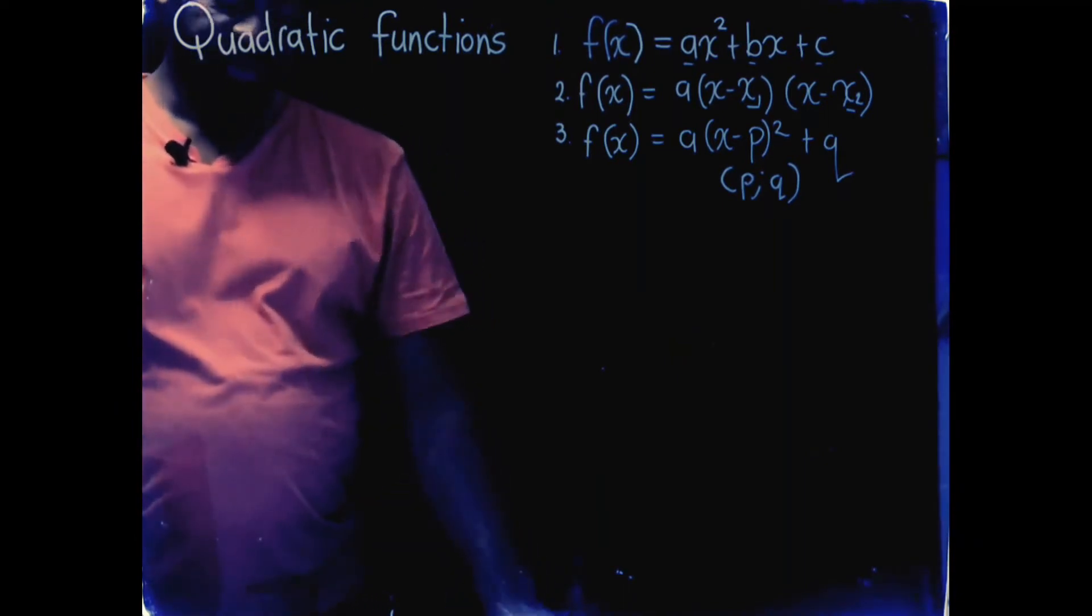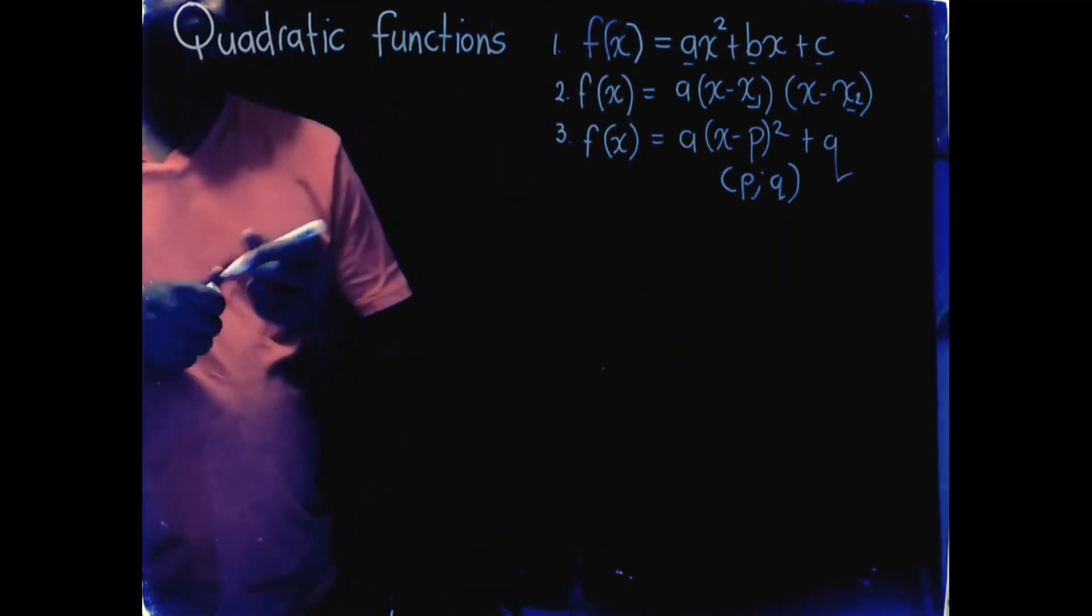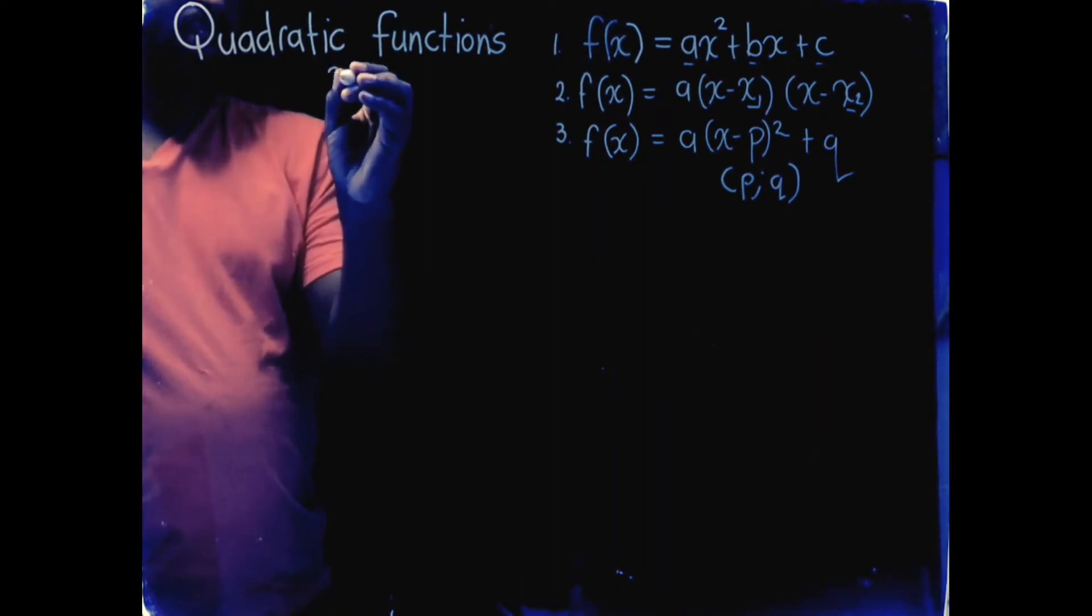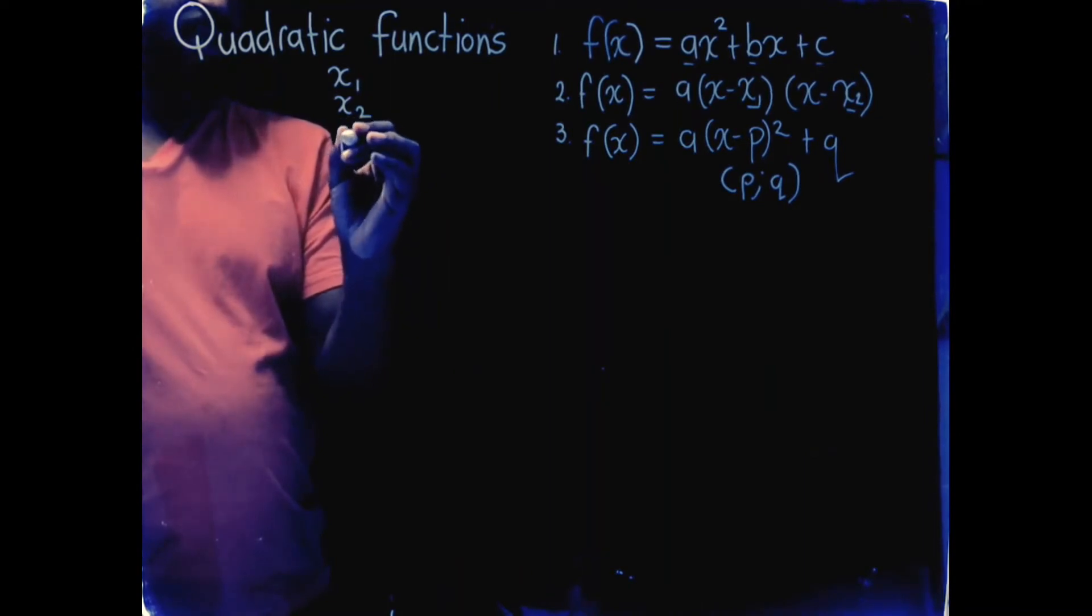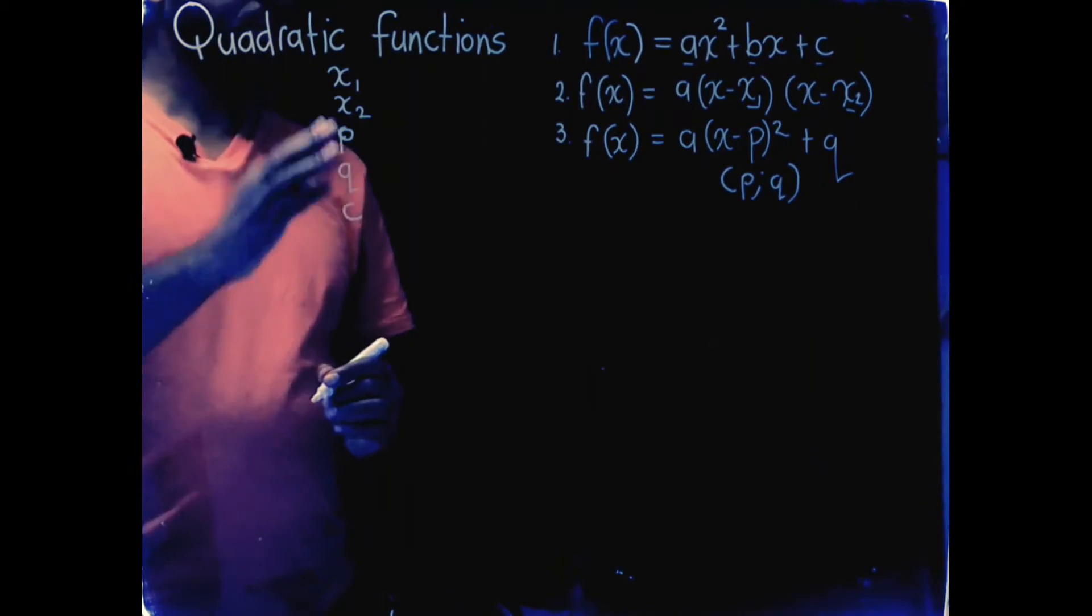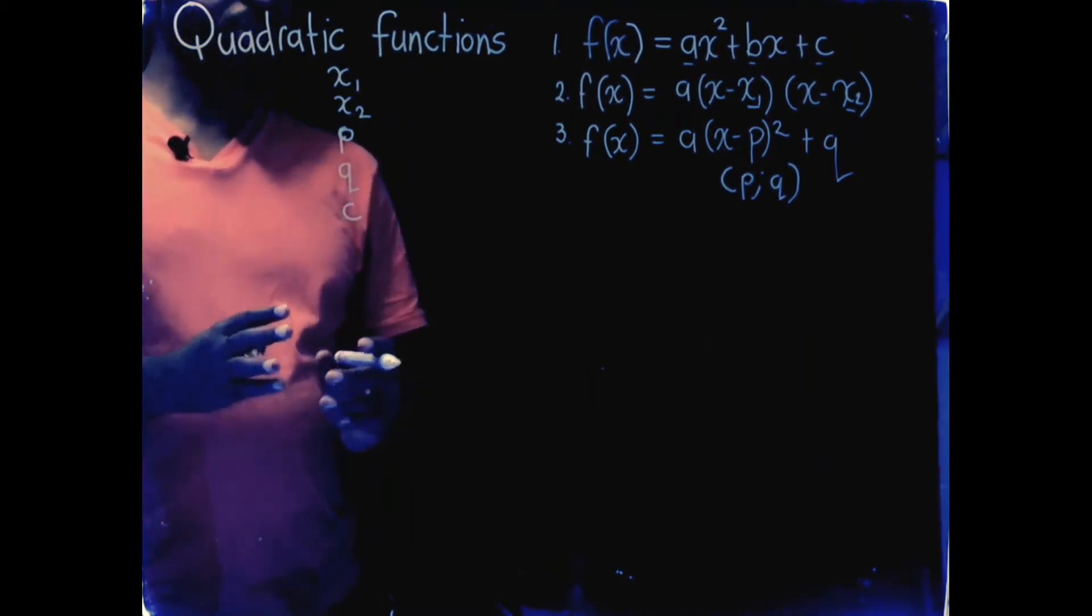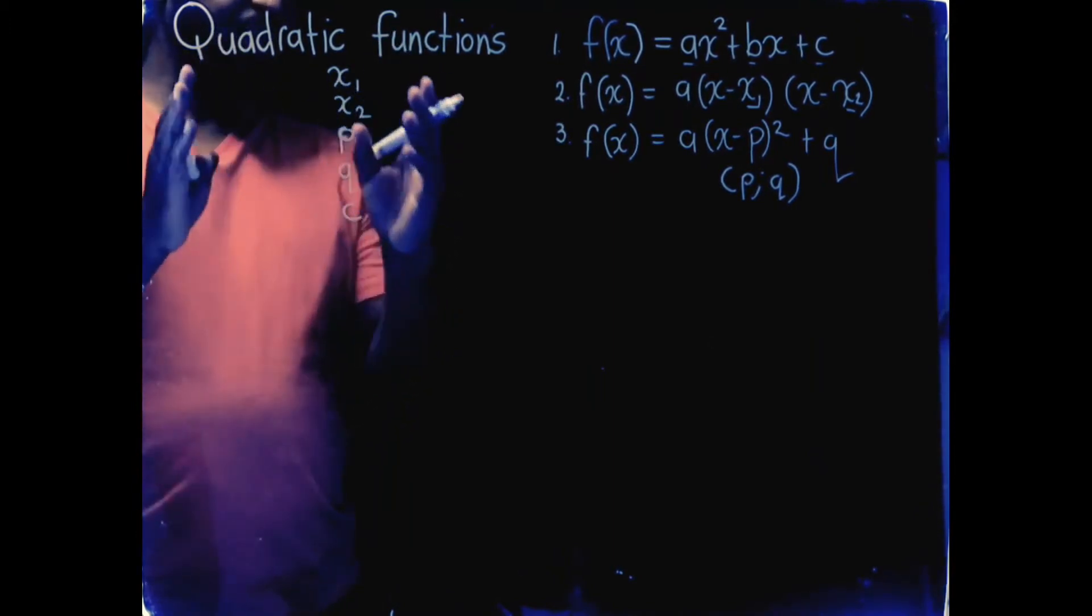If you're going to plot a quadratic function, you're going to need five different values. You're going to need x1, you're going to need x2, you're also going to need p, you're going to need q, and you're going to need c. So when you're asked to plot a quadratic function, you need all these values.